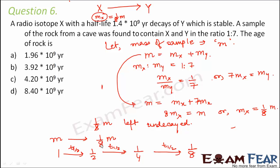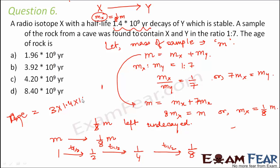The half-life given in the question is 1.4 × 10⁹ years. So the age of the rock is 3 half-lives, meaning 3 × 1.4 × 10⁹ years. That is option C.